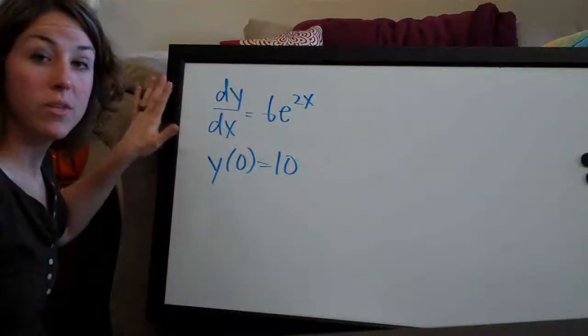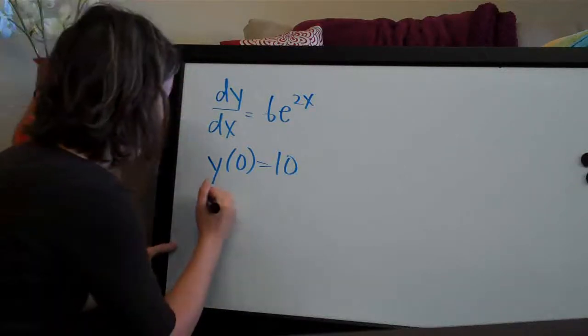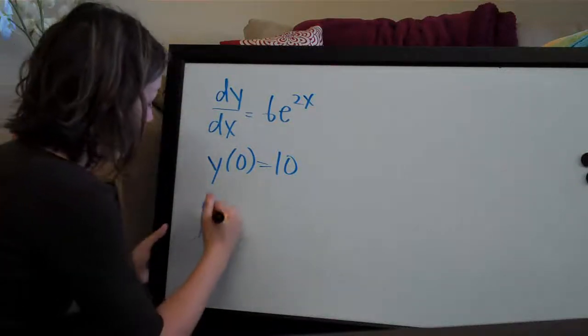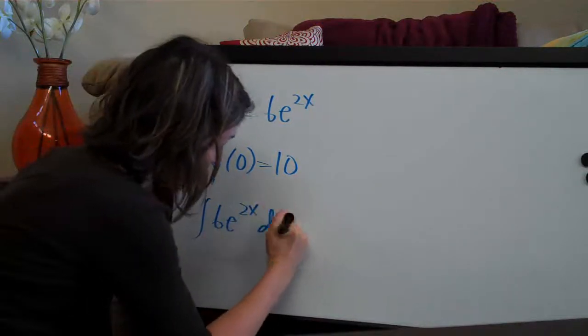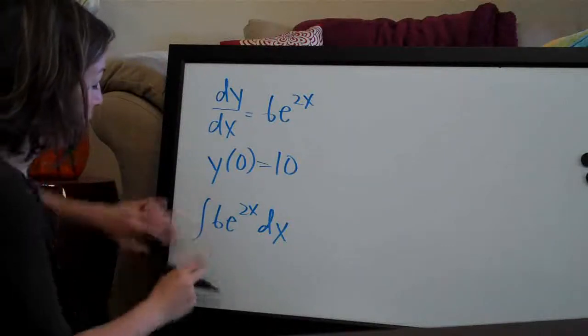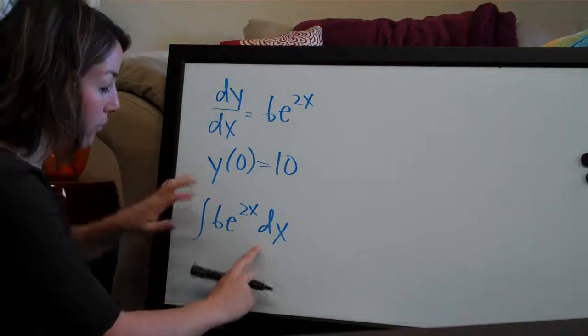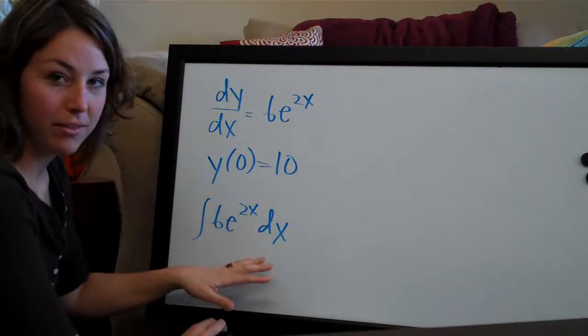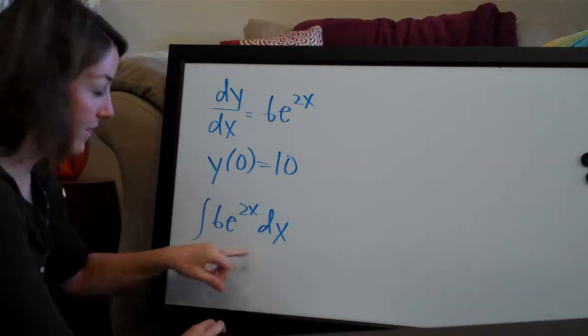As always with initial value problems, the first thing we do is take the integral of the function, so integral of 6e^(2x) dx. We always add dx because it's part of integral notation. The integral symbol and dx always go together.